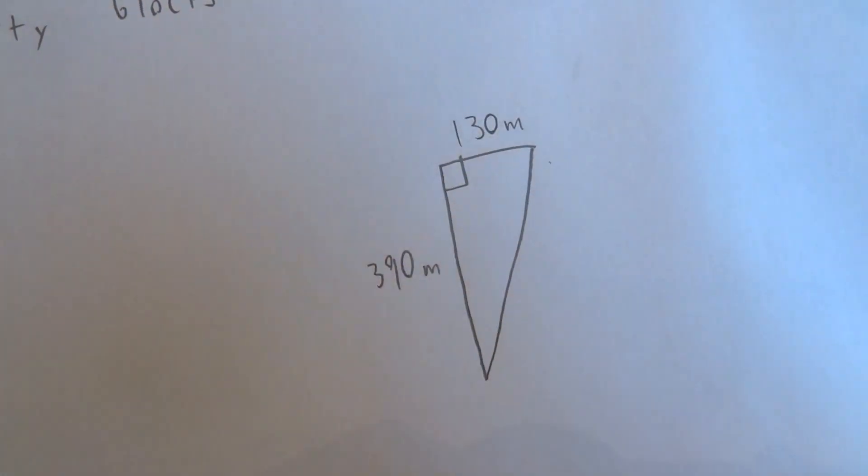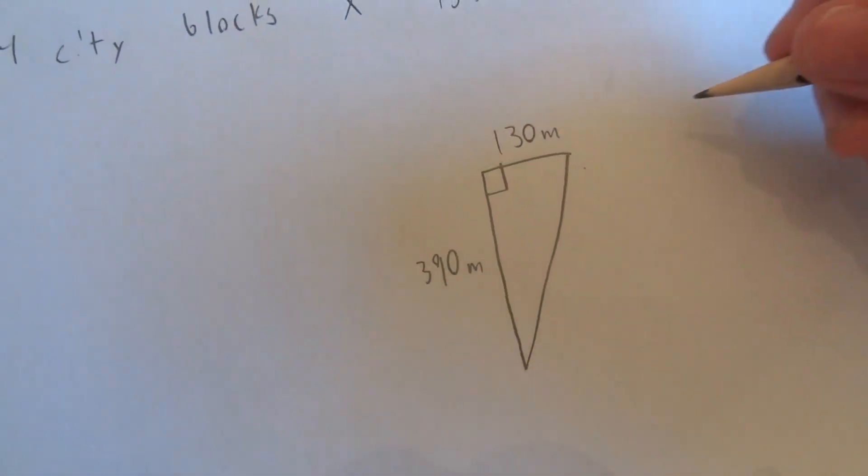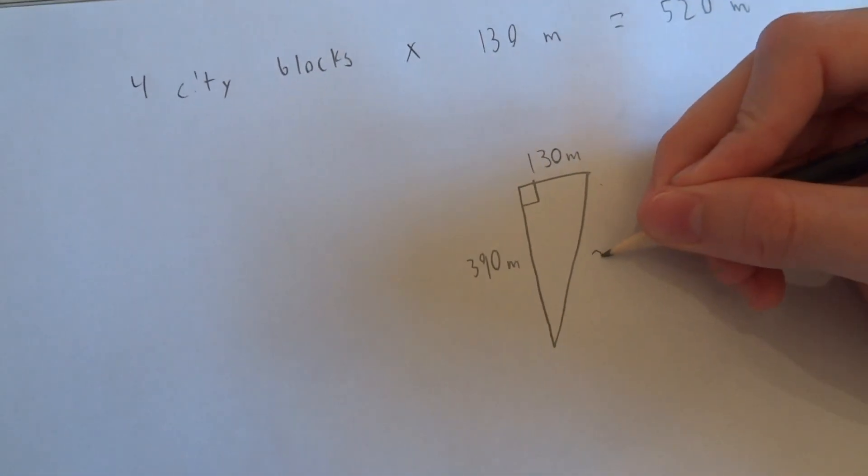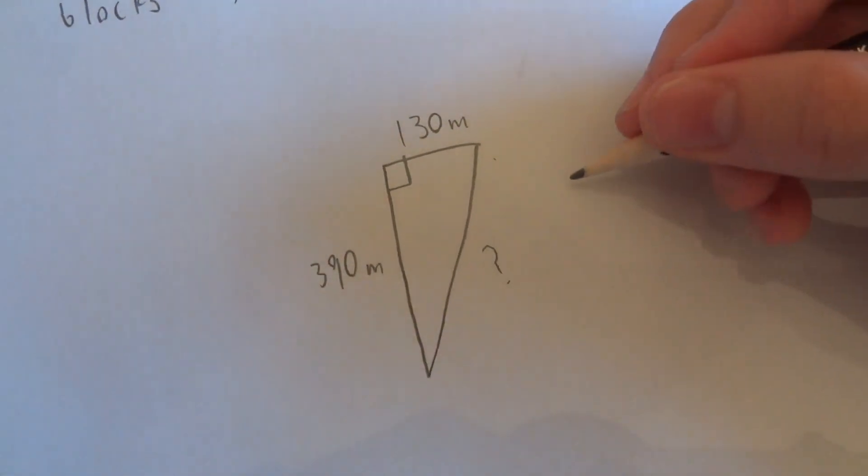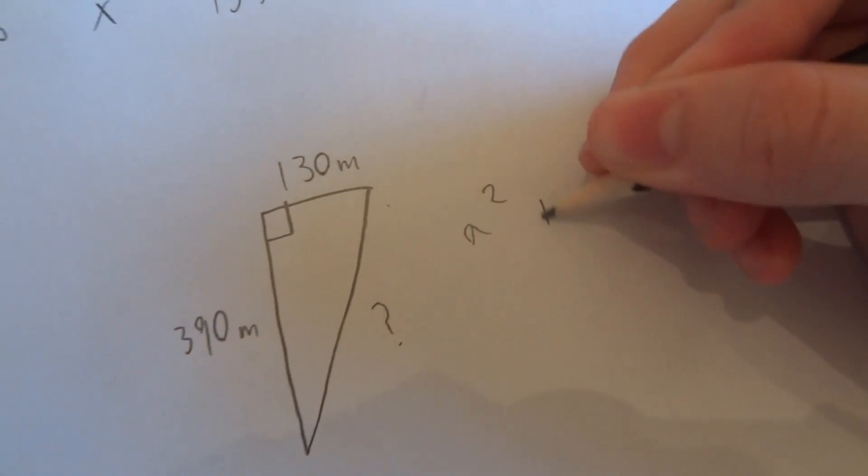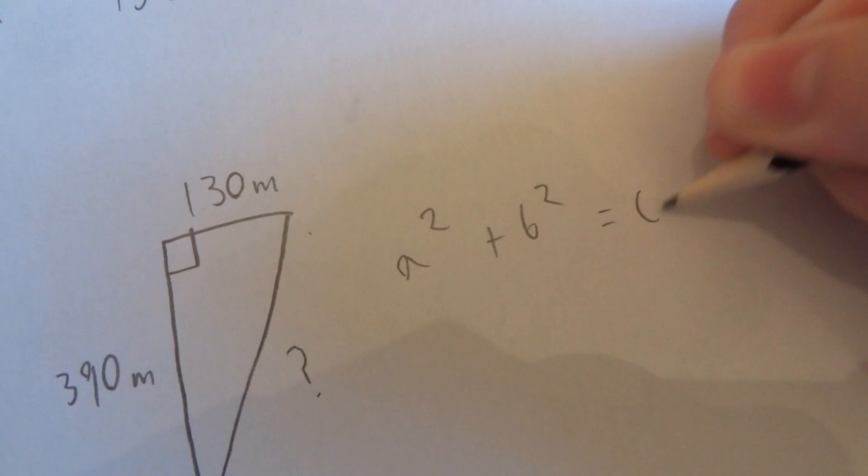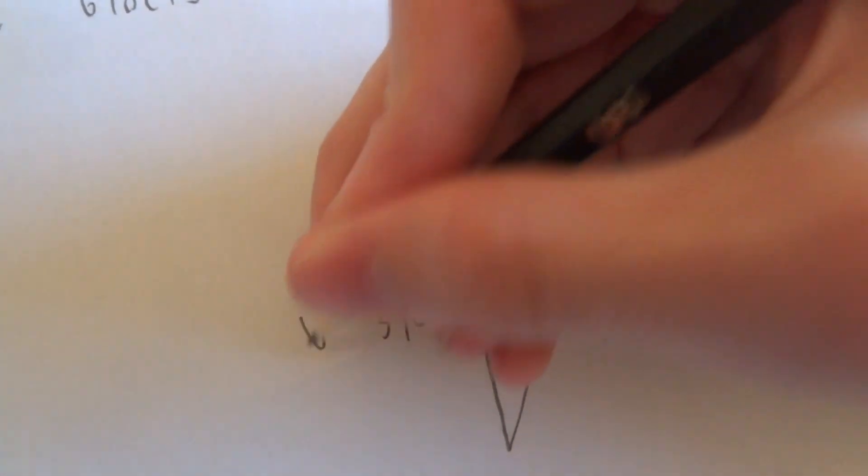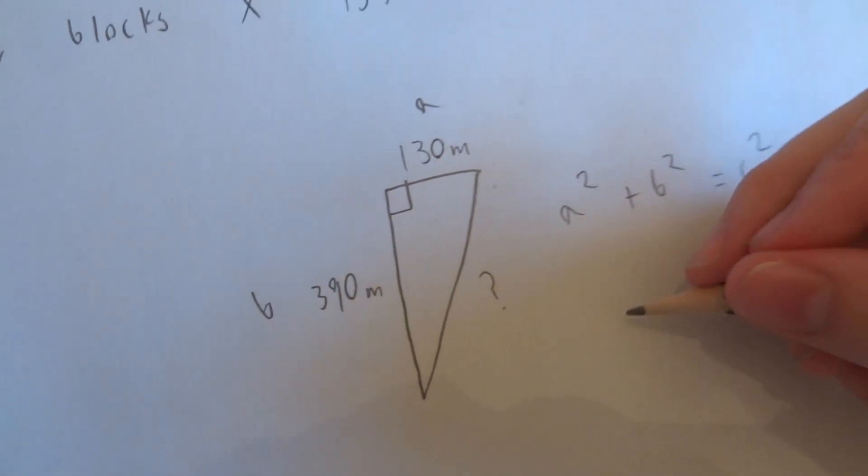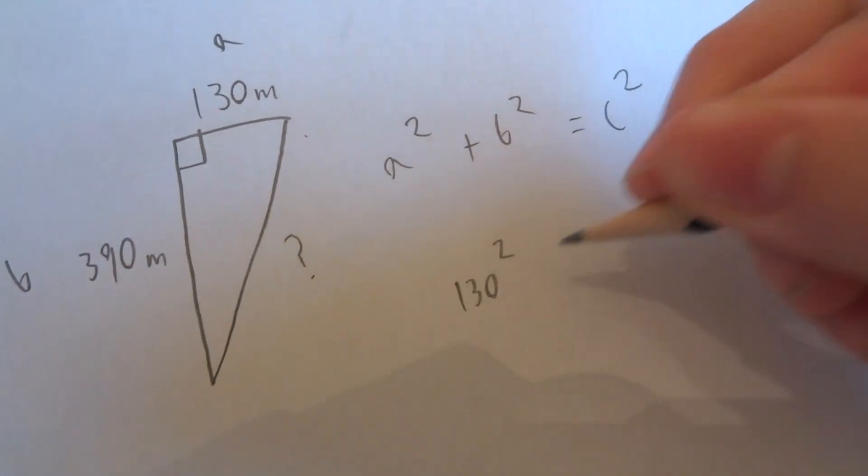And so to find this side we have to use the Pythagorean theorem, which is A squared plus B squared equals C squared, where this is A and this is B.